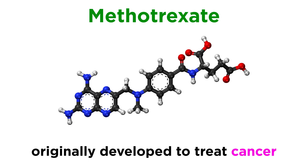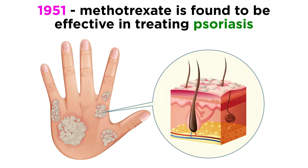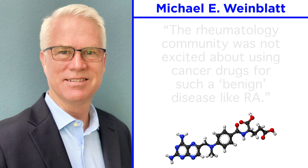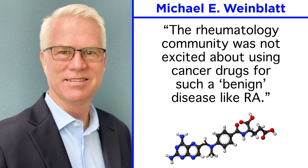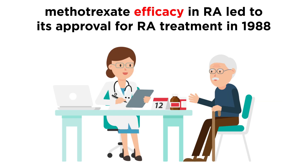Despite its use in treating RA, methotrexate was originally developed to treat cancer. However, as early as 1951, physicians used it to treat patients with the inflammatory disease psoriasis, suggesting that it may have benefits in other inflammatory diseases. Quoting Michael E. Weinblatt, a doctor who helped pioneer methotrexate's use in RA treatment, the rheumatology community was not excited about using cancer drugs for such a benign disease like RA. Despite this, scattered reports of methotrexate efficacy in RA sparked larger clinical studies in the 1980s, leading to its approval for RA treatment in 1988.